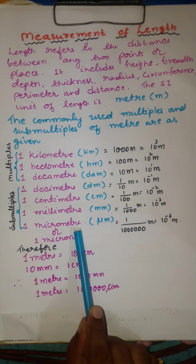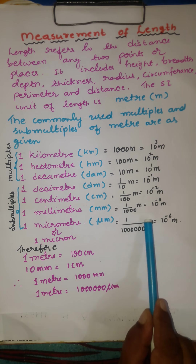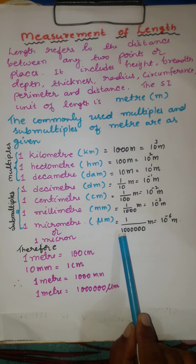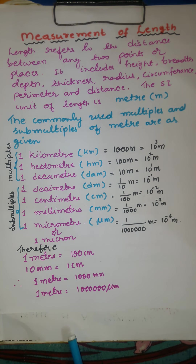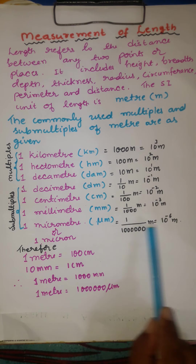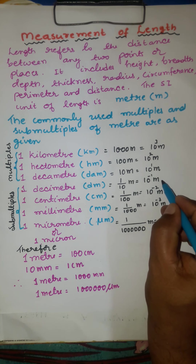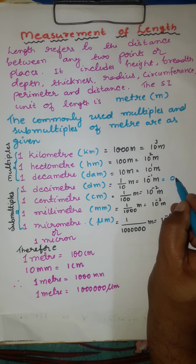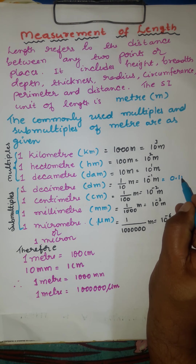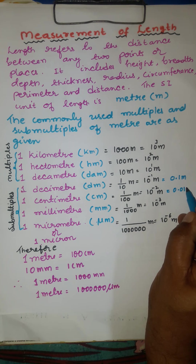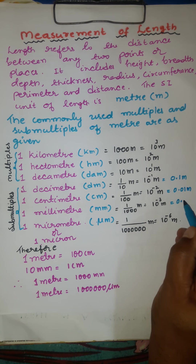1 micrometer: 1 meter is divided into 1 million parts (1 followed by 6 zeros), and each part is known as a micrometer — 10 to the power of minus 6 meter. In decimal form, millimeter is 0.001 meter, centimeter is 0.01 meter, and decimeter is 0.1 meter.